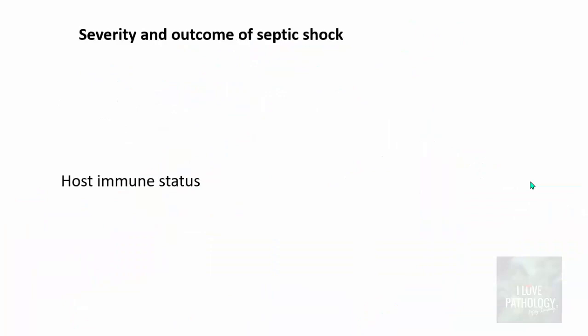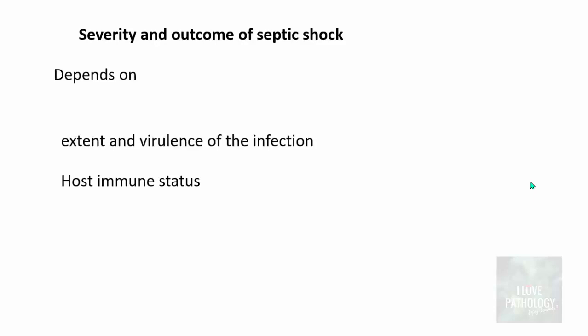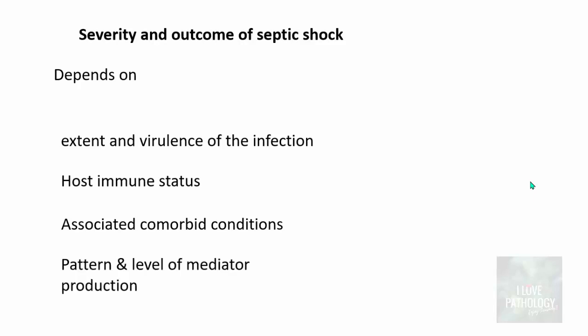The severity and outcome of septic shock depends on several factors: one important factor is host immune status; second, it depends on the extent and virulence of the infection; and third, associated comorbid conditions — if the patient already has conditions like diabetes mellitus, the outcome of septic shock is not good. It also depends on the pattern and level of mediator production — whether towards inflammation or anti-inflammation.